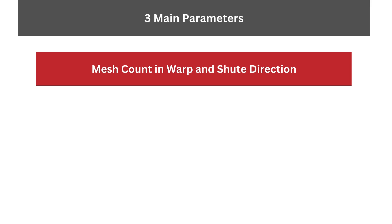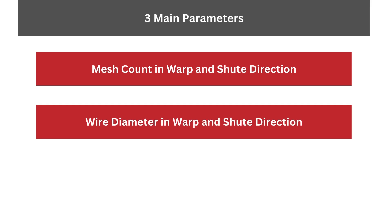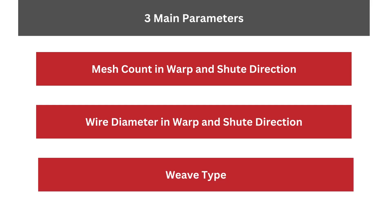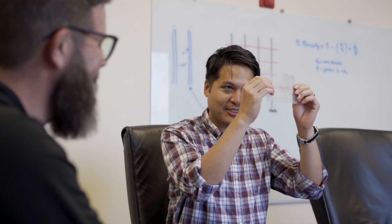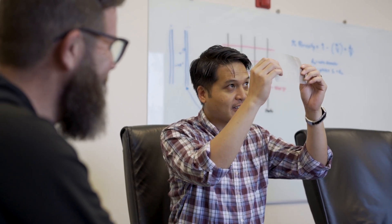In fact, by controlling parameters such as wire count, wire diameter, and weave type, several different types of meshes can be produced to achieve the same retention target. So the question is, what mesh should you choose?